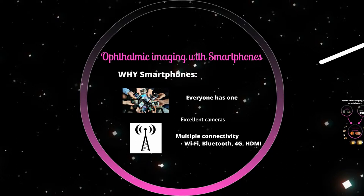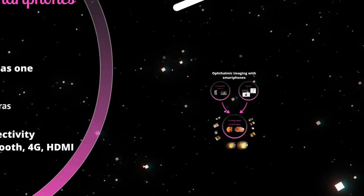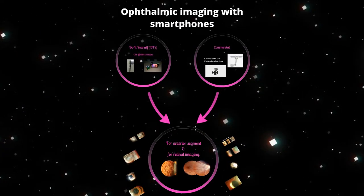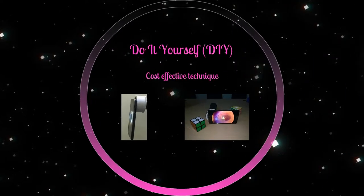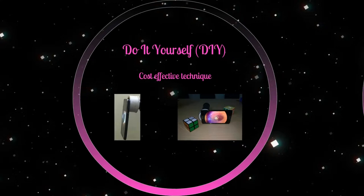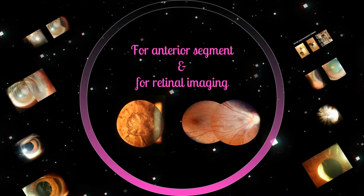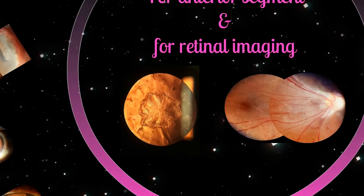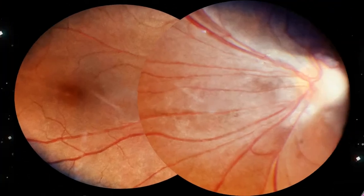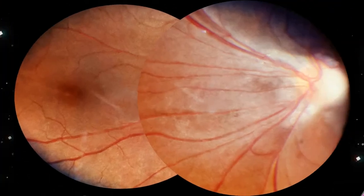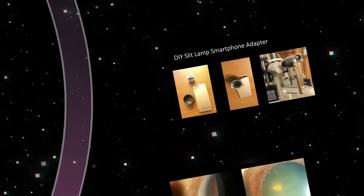These qualities of the smartphone make them useful in an ophthalmologist's clinical practice. Nowadays, we have the option of using a do-it-yourself adapter or a commercially available adapter for smartphone ophthalmic imaging. Both are capable of capturing good quality images for the anterior segment, like this congenital zonular cataract, and posterior segment, as in this montage of aggressive retinopathy of prematurity with temporal drag of macula and vessels.